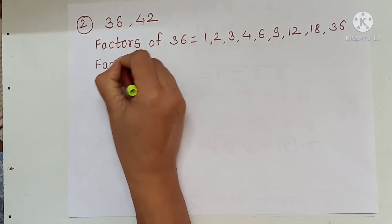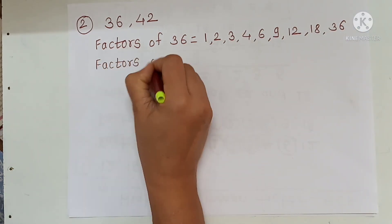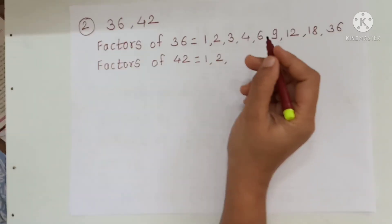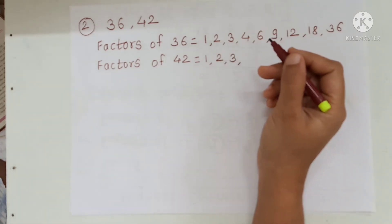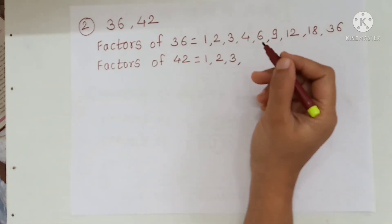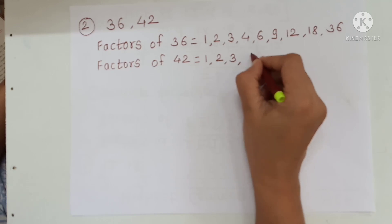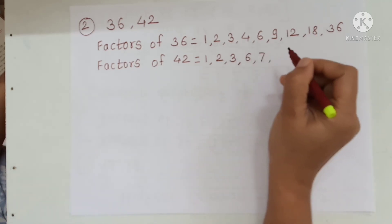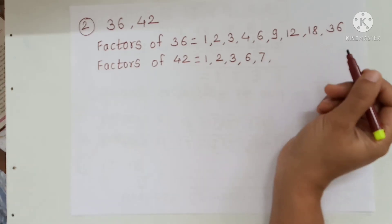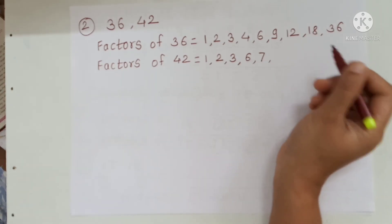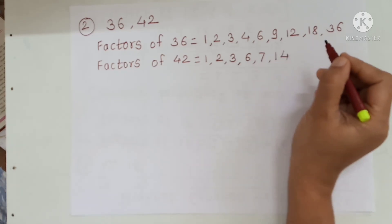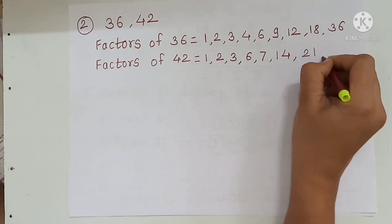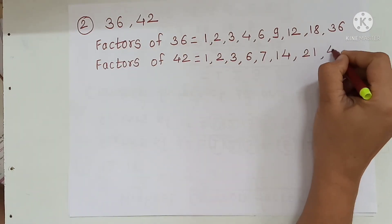Then factors of 42: 1, 2, 3, not 4, 6, 7, then 14 and 21, and 42 also.